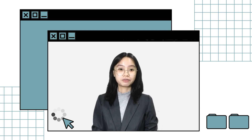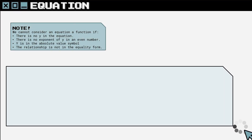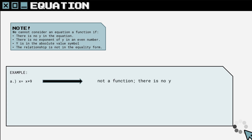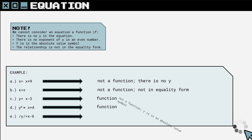The final way of expressing functions and relations is through equations. Keep in mind four rules in determining if an equation is a function or relation. Example 1 is not a function, for there is no y. Example 2 is a relation, for it is not in equality form. Examples 3 and 4 are functions, as they satisfy the rules. Example 5 is a relation, for y is in an absolute value symbol.